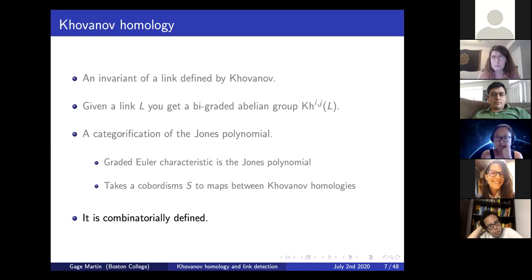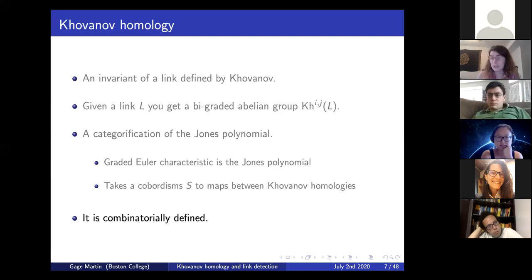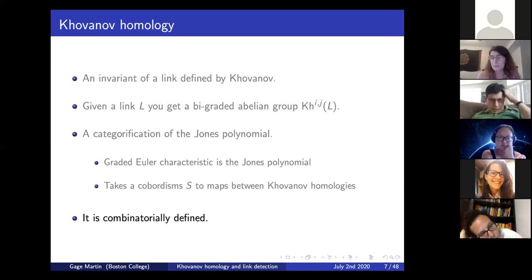It's relatively straightforward to follow these rules. Within a few hours, you could teach an undergraduate who knows some linear algebra how to compute a simple example. And computers are very good at computing Khovanov homology; they can do so relatively quickly. It's relatively easy to give a computer a picture of a knot and ask what the Khovanov homology of that knot is.